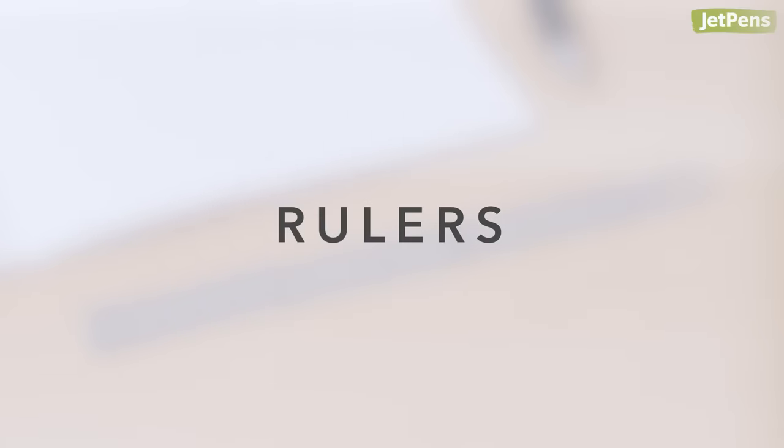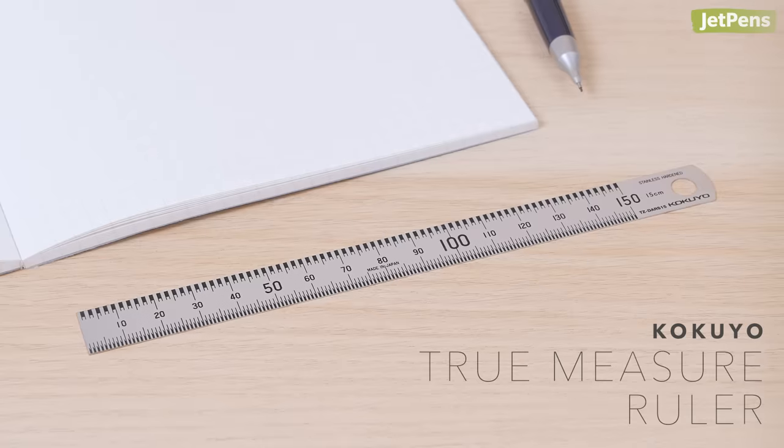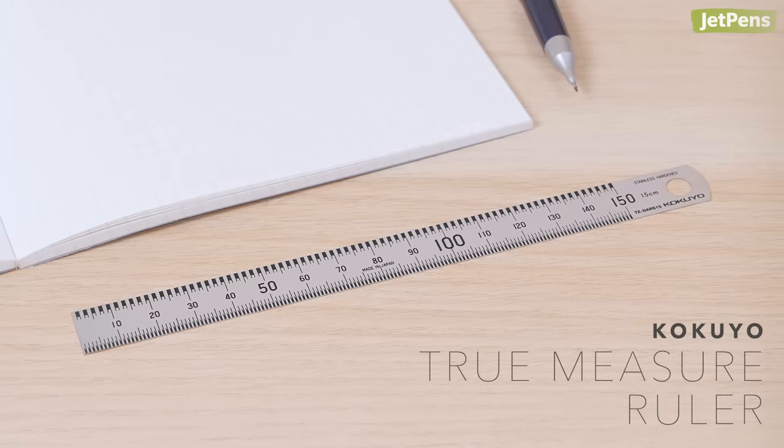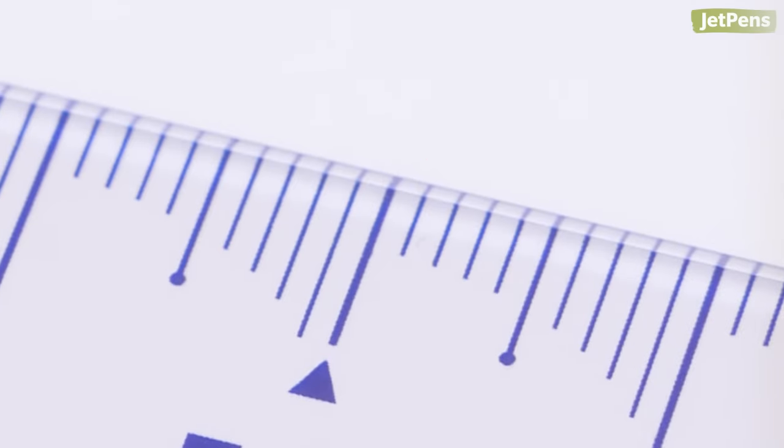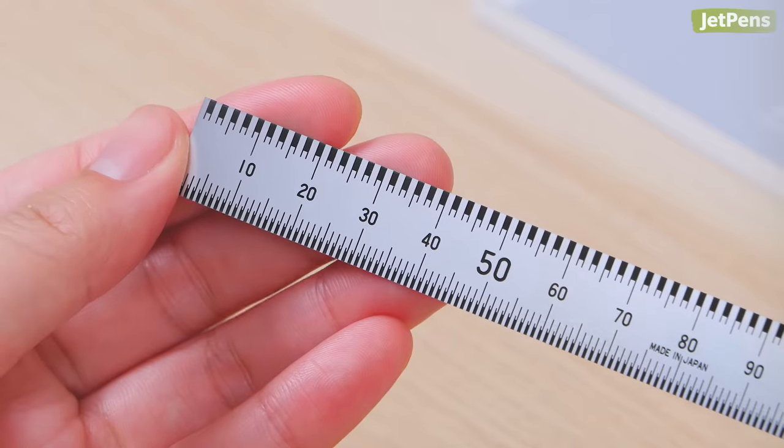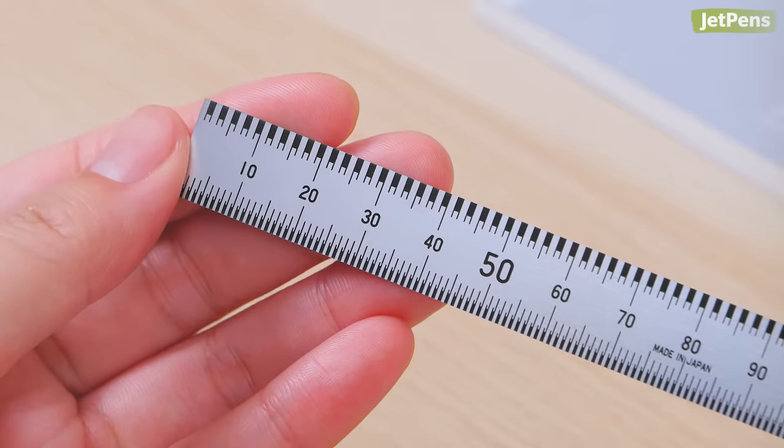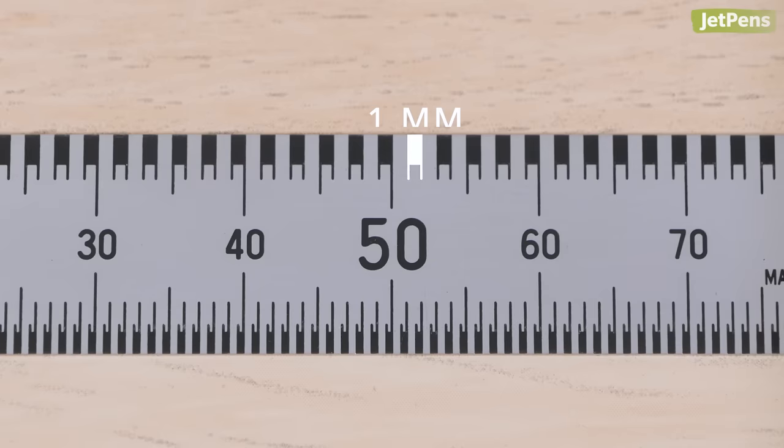Rulers. The Kokuyo TrueMeasure provides absolute precision when it comes to measuring. Instead of hatch marks, which can be up to 0.2 millimeters wide, it features an unambiguous pattern of alternating light and dark stripes. Each stripe is exactly 1 millimeter wide along one edge of the ruler and 0.5 millimeter wide on the other edge.